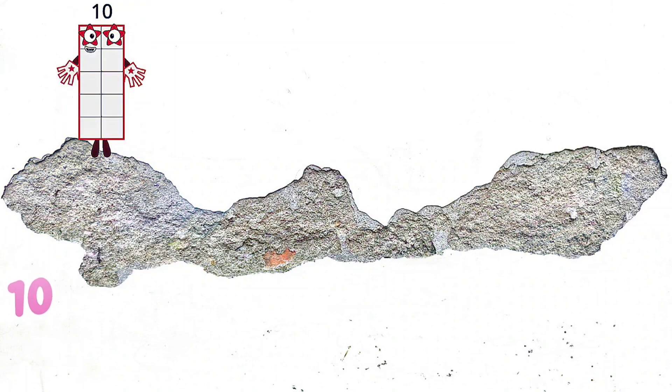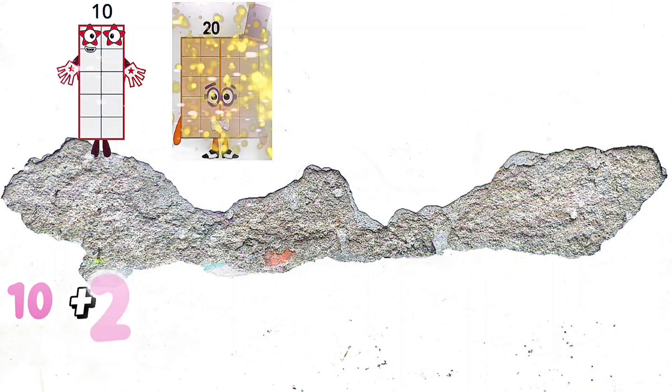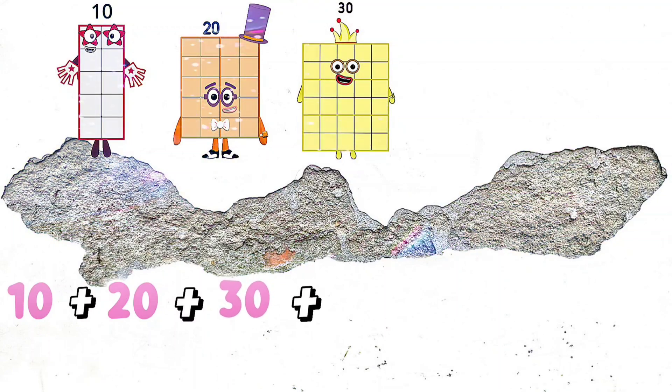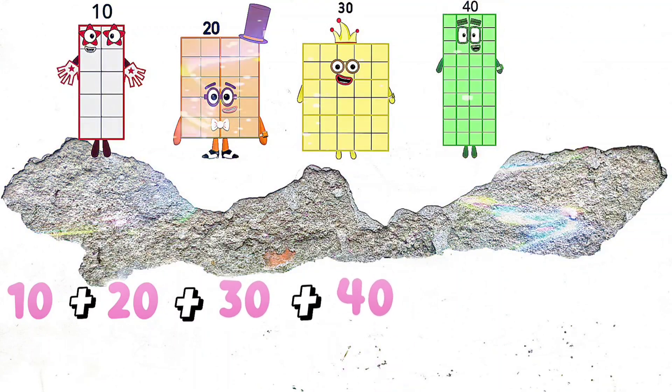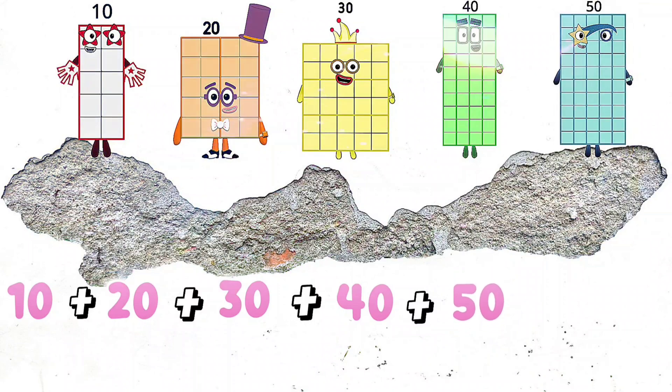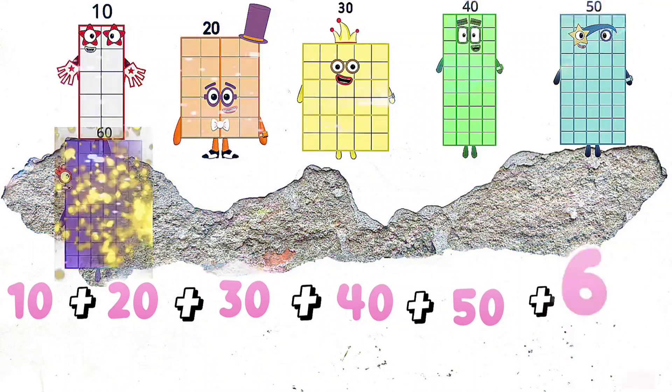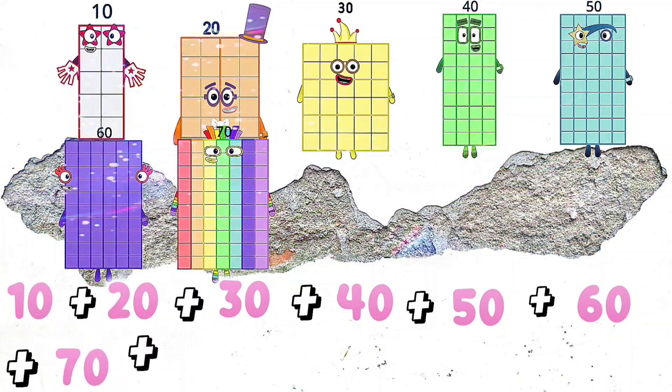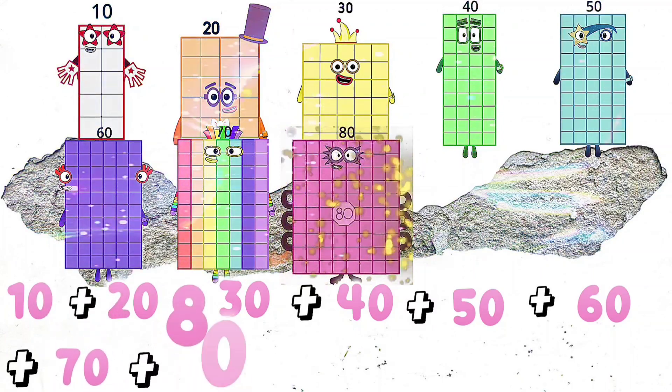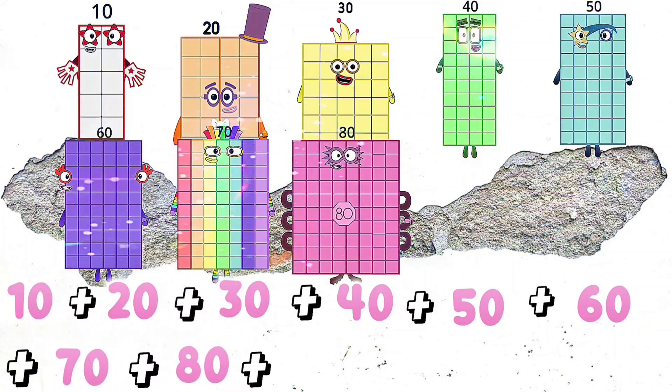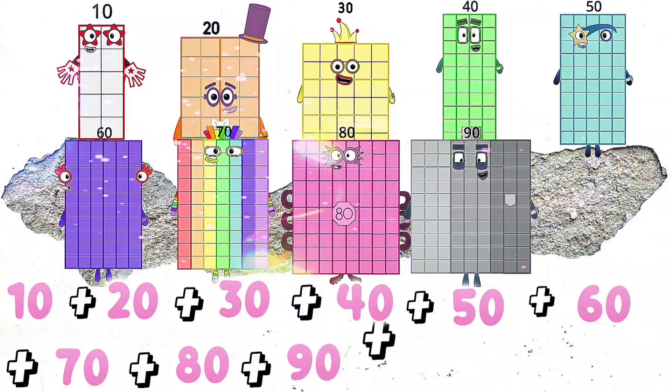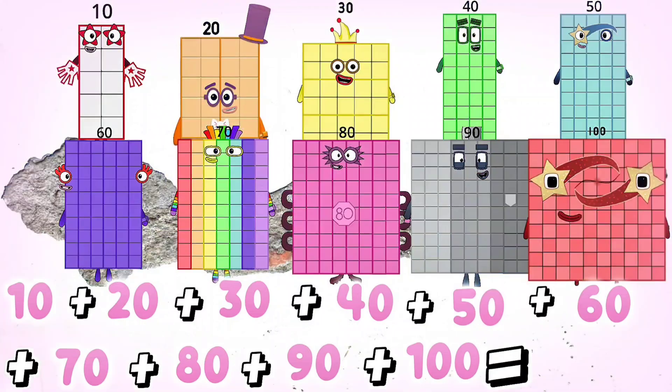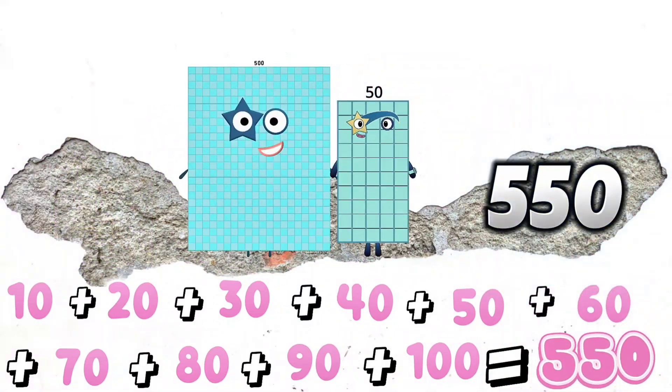10 plus 20 plus 30 plus 40 plus 50 plus 60 plus 70 plus 80 plus 90 plus 100 equals 550.